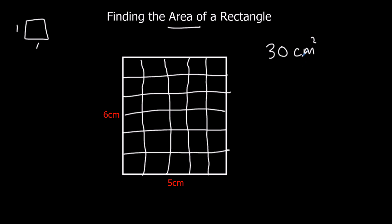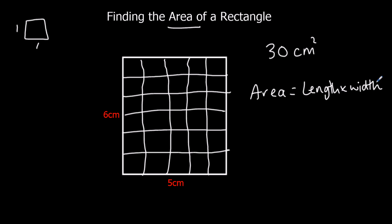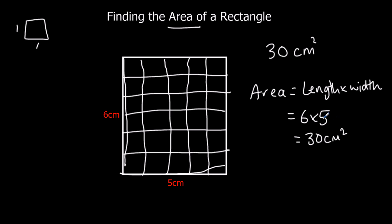Thirty of the centimetre squares go into this shape. Now, the quick way to work out the area of a rectangle is: area equals the length times the width. So this side multiplied by this side — six times five — and that's thirty centimetres squared. When we're working out the area of a rectangle, we need to do the length times the width.